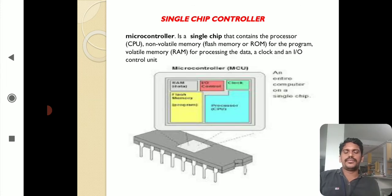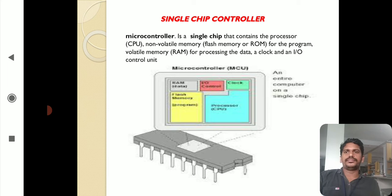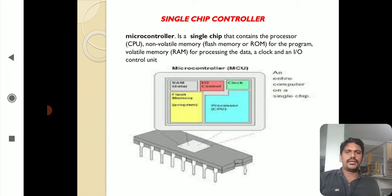First, the definition of microcontroller. A microcontroller is a single chip that contains the processor — that is, the central processing unit — non-volatile memory such as flash memory or ROM for the program, volatile memory that is RAM for processing data, a clock, and an I/O control unit. These are the different parts built into a single chip microcontroller.